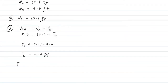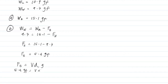Buoyant force equals volume of the body times density of the liquid times gravity. So 5.4 gram force equals volume times density. Since it is water, density is 1. Therefore, we get the volume as 5.4 centimeter cube.